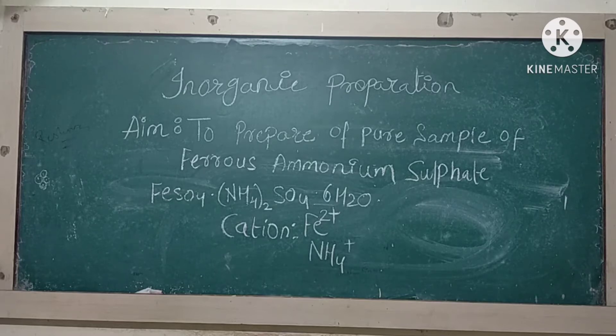It has the formula FeSO4, (NH4)2SO4, 6H2O. It has two different cations: Fe2+ and the ammonium ion NH4+.